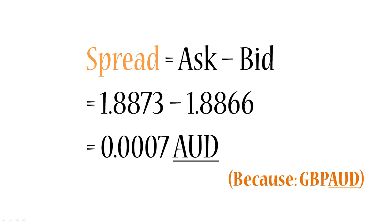So in this instance, the spread is 0.07 of an Australian cent, which is very low compared to our everyday understanding. When we go to an exchange booth, the spread is usually at least a couple of cents, maybe a dollar or so on certain currency pairs. But on the forex market, the spreads are very low — this is called very tight spreads.